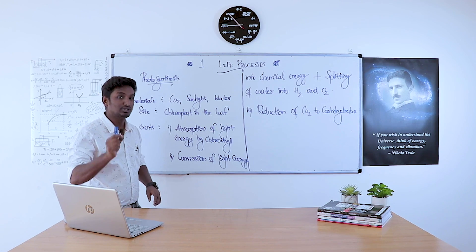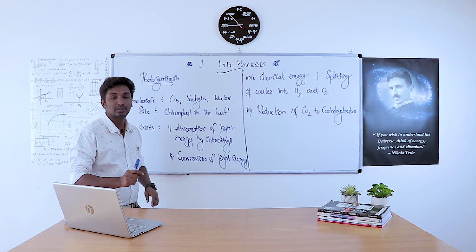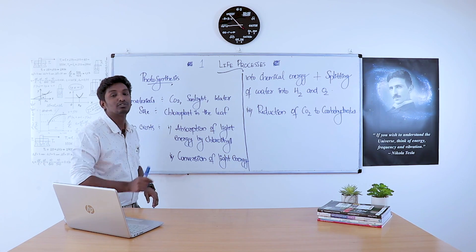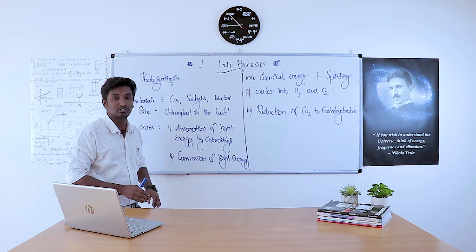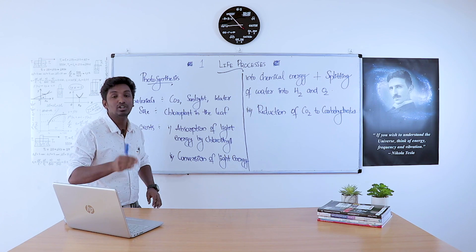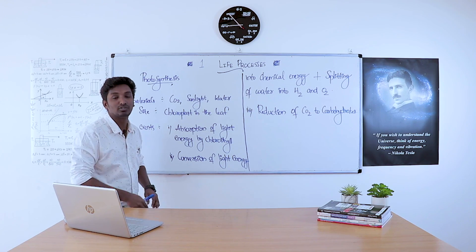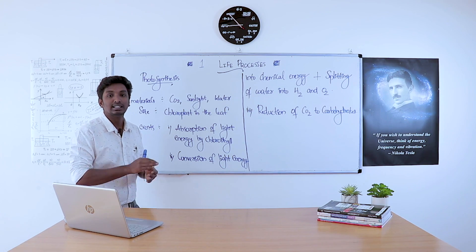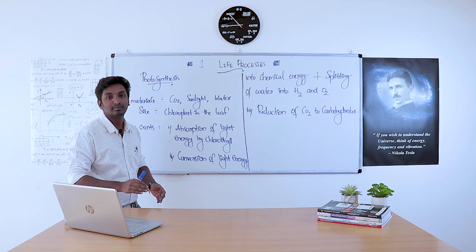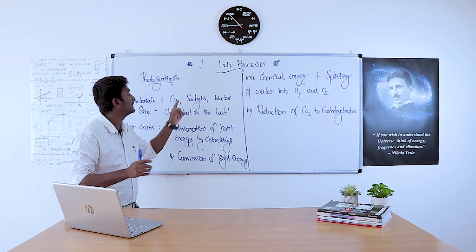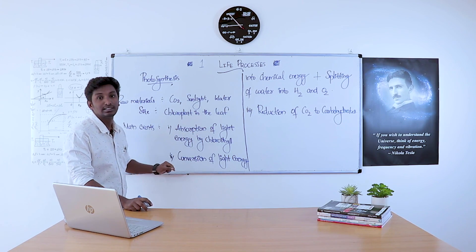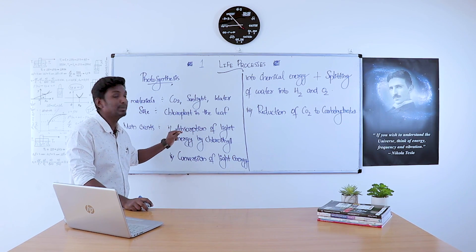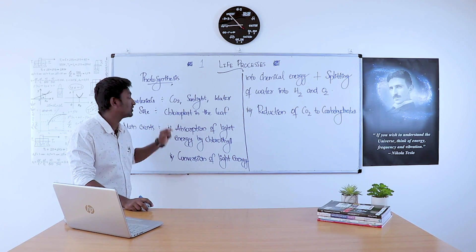We have three main events happening during photosynthesis. This is a 90% exam question — it can be asked as: what are the events of photosynthesis, what are the main events, or how will you explain the events of photosynthesis. So let's look at what all things are happening during photosynthesis.